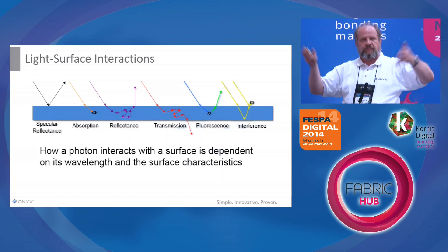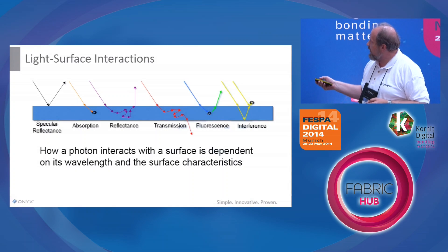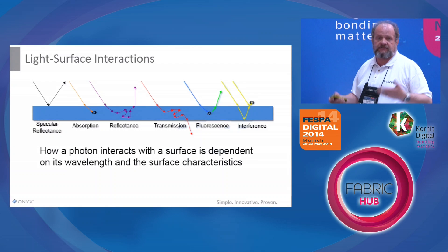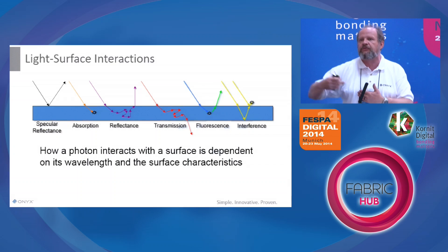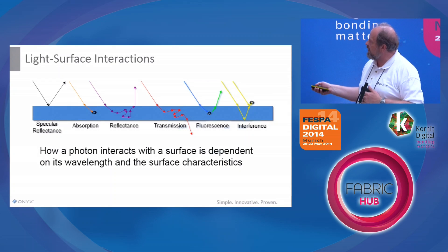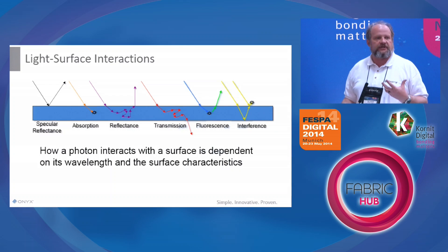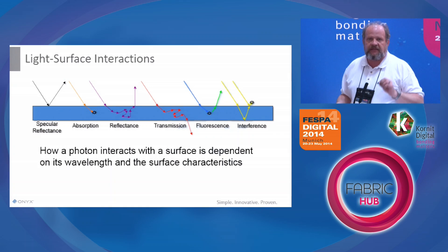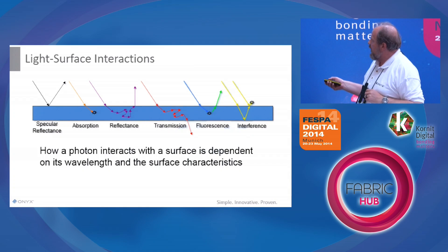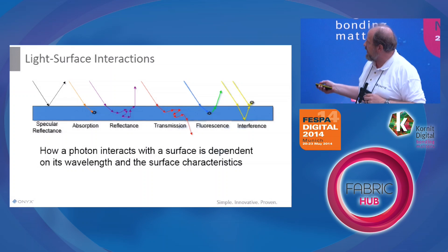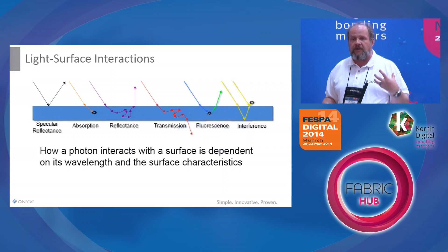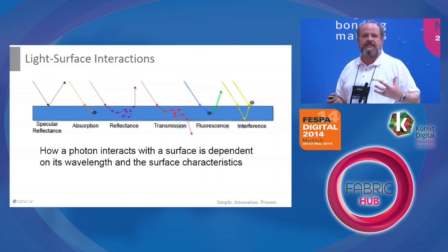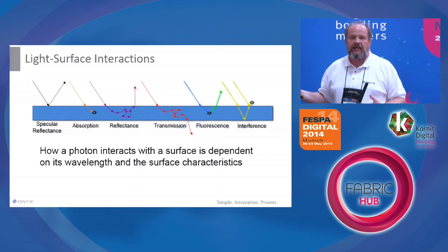Diffuse light will actually reflect off the surface in every direction equally. Light can also go through and bounce around between the molecules and eventually go out the other side — that's transmittance. A backlit film is essentially reflected light going through the surface itself. These two — reflection and transmittance — are typically the only things considered in graphic arts. But when we're talking about textiles, specular reflectance can be important because light can actually bounce off the surface itself. Light can also go in, bounce around, be absorbed by a molecule, and be re-emitted at a different wavelength — for instance, coming in as ultraviolet and going out as blue light. That's called fluorescence.